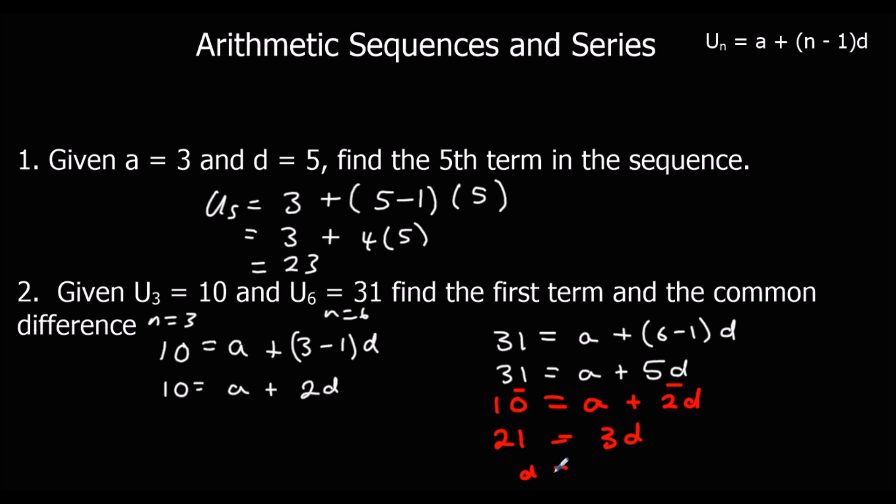d must be 7. And I can use that d is 7. And I'll substitute it in. a, plus 2, 7s. 10 equals a, plus 14. Minus 14 from both sides. a must be minus 4.